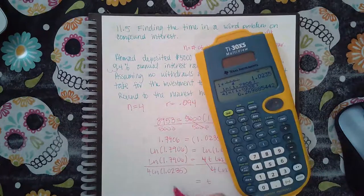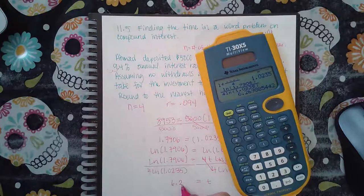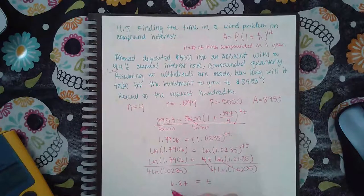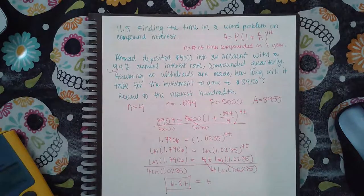And we get 6.27. It says round to the nearest hundredth, tenths, hundredths. I already did that. So it's 6.27 years.